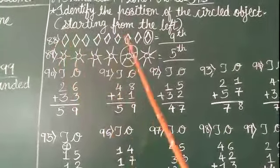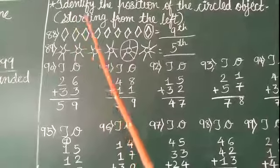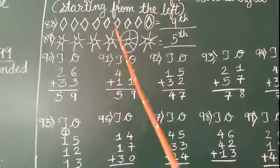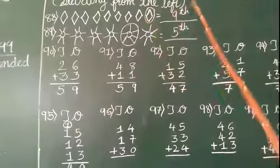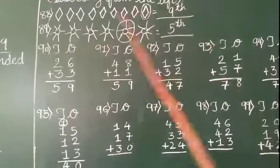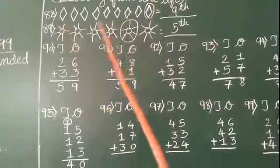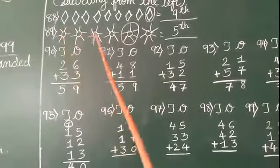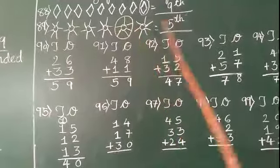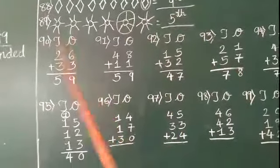Identify the position of the circled objects starting from the left. Number 88: we have to find the position of the circle object. 1st, 2nd, 3rd, 4th, 5th, 6th, 7th, 8th, and 9th. So in the last, 9th circle is given, so we've written here 9th. Number 89, sun is given - what is the position? Starting from left: 1st, 2nd, 3rd, 4th, 5th. So we've written 5th. Now number 90: 6 plus 3 equals 9, and 3 plus 2 equals